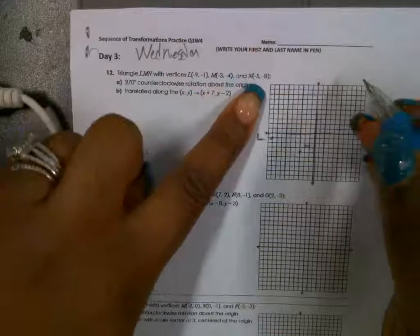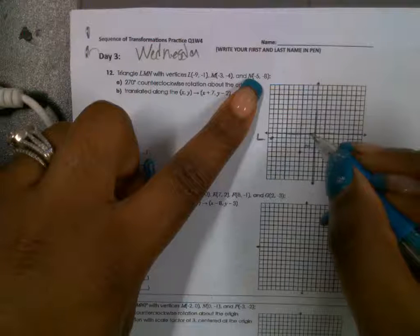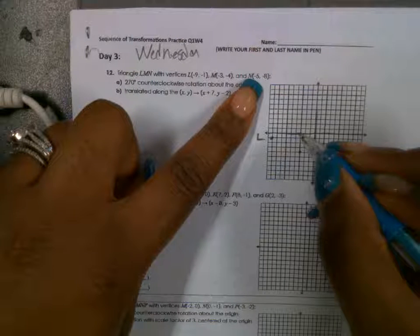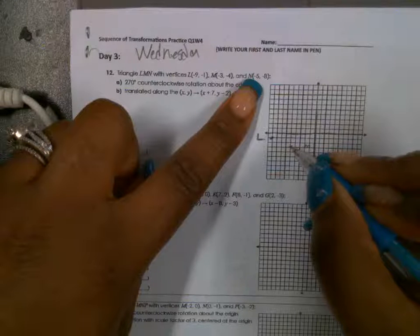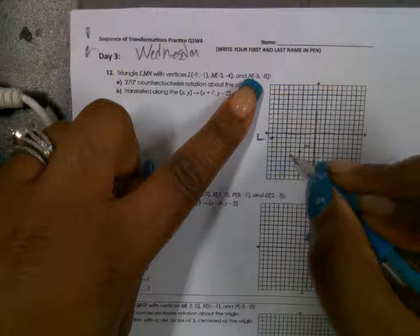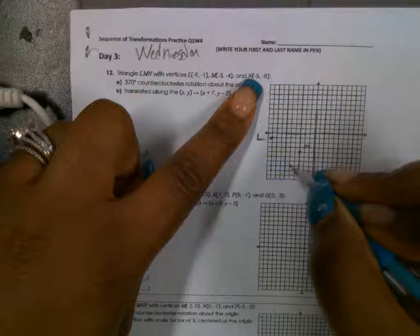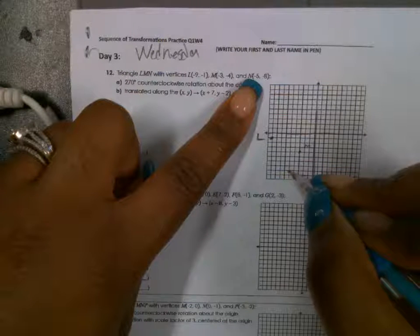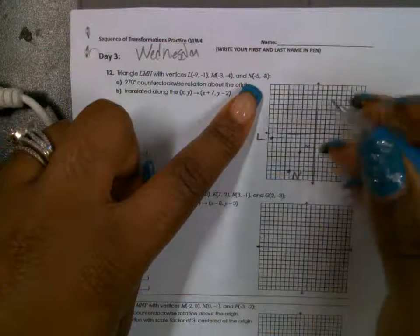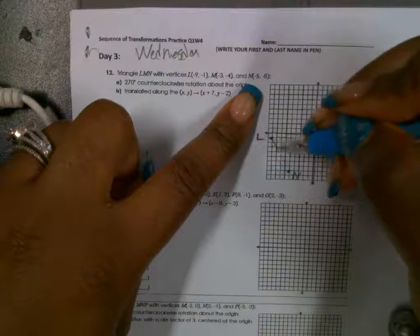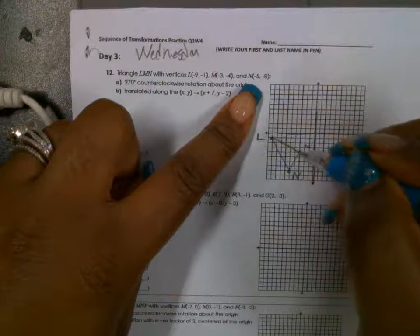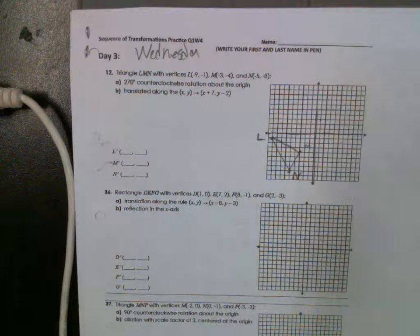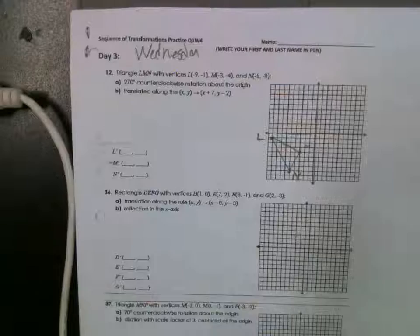And N is negative 5 and negative 8 — 1, 2, 3, 4, 5, and down 1, 2, 3, 4, 5, 6, 7, and 8. All right, so now what they want you to do is rotate 270 degrees counterclockwise.